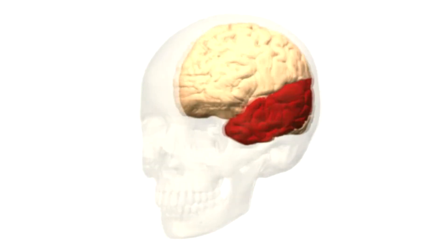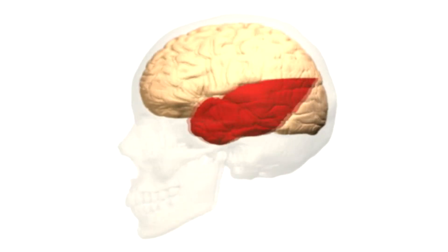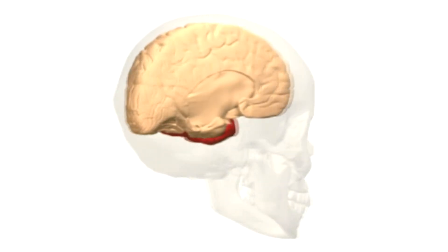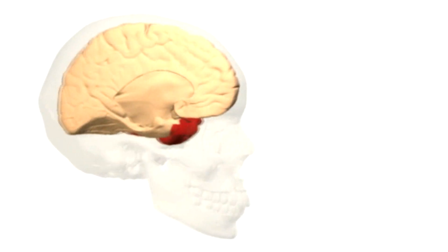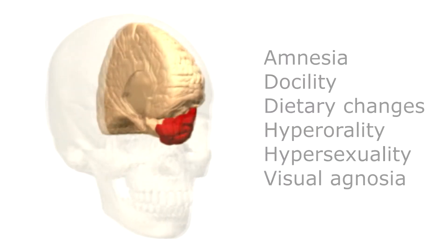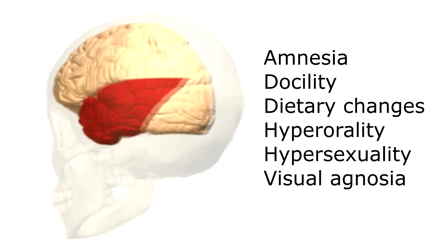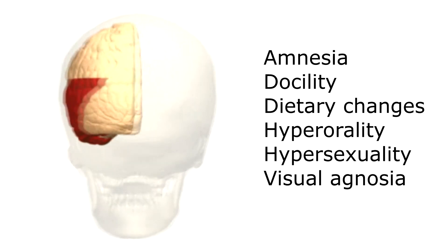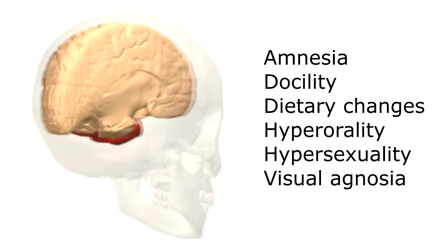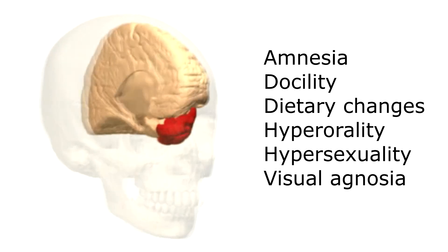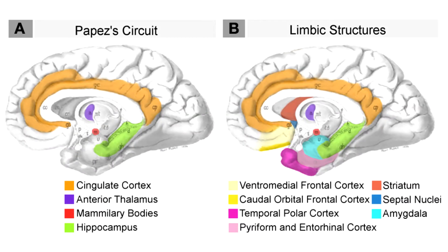For instance, lesions in the medial temporal lobe may cause a syndrome called Kluver-Bucy syndrome, with symptoms such as amnesia, docility, dietary changes, hyperorality, hypersexuality, and visual agnosia.